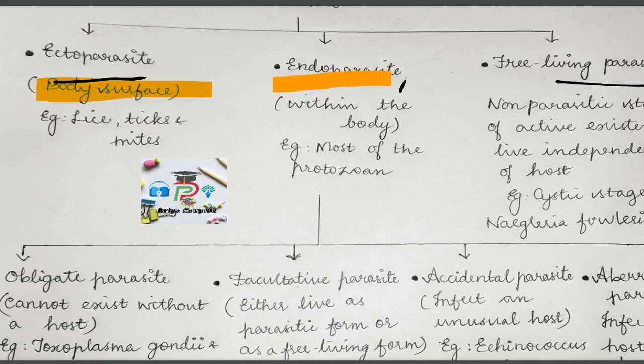Next is endoparasites. Endoparasites are parasites that will penetrate the body of the host and live inside the body of the host. Examples are most of the protozoan and helminthic parasites causing human diseases.